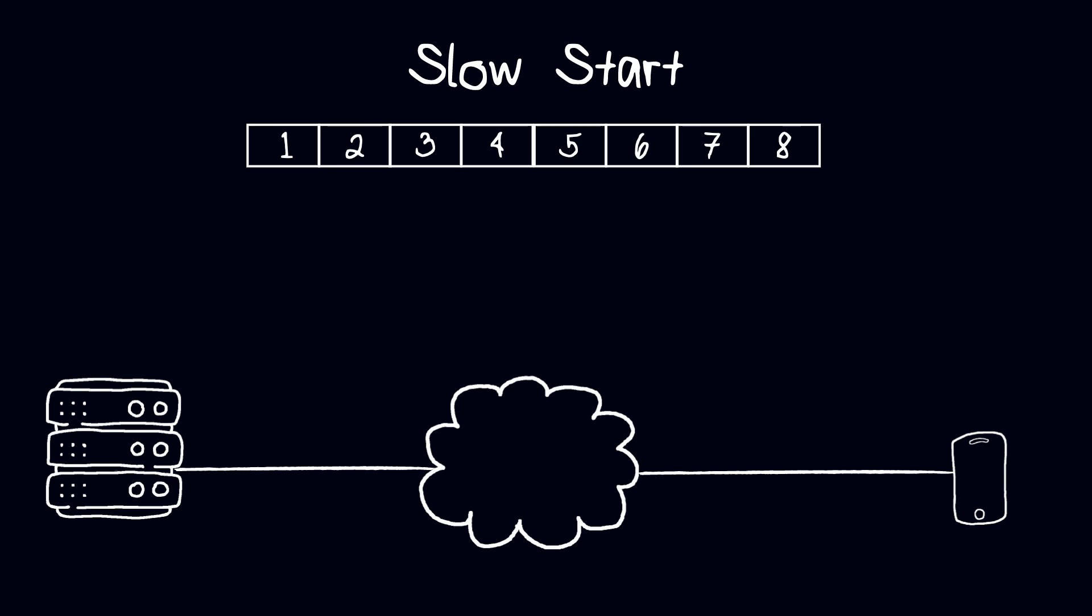Let's visualize an example to better understand this phase. Let's say the initial congestion window size is one maximum segment size and the sender receives the first ACK. As shown, for every single ACK received, the window increases by one segment size.